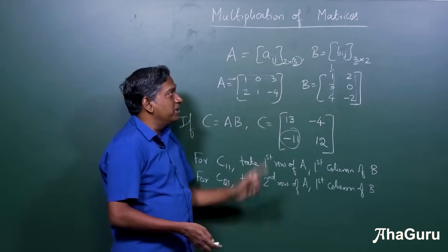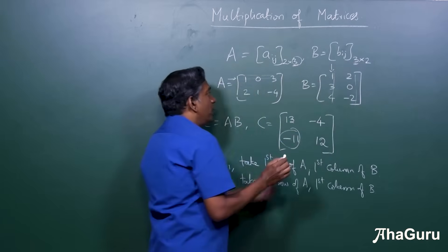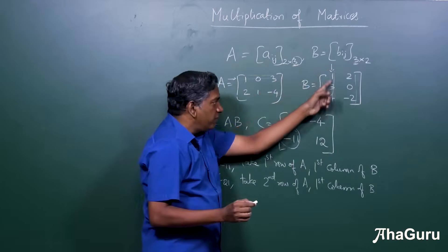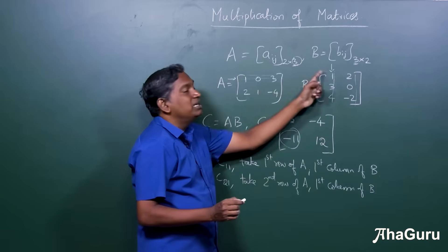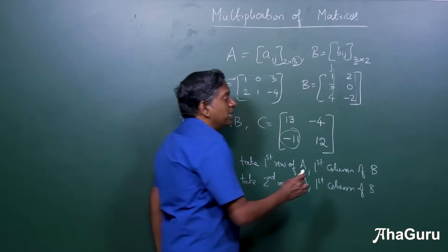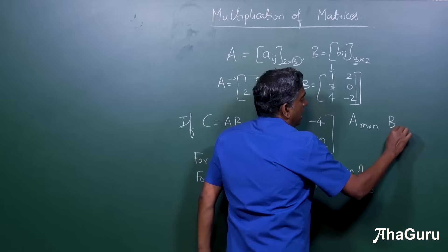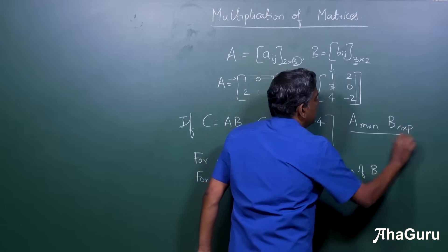In order to do this multiplication, this 3 and this 3 must be equal. If you had 3 entries here, but 5 entries here, you can't multiply term by term, which means matrix multiplication is only possible if A is M by N and B is N by P.